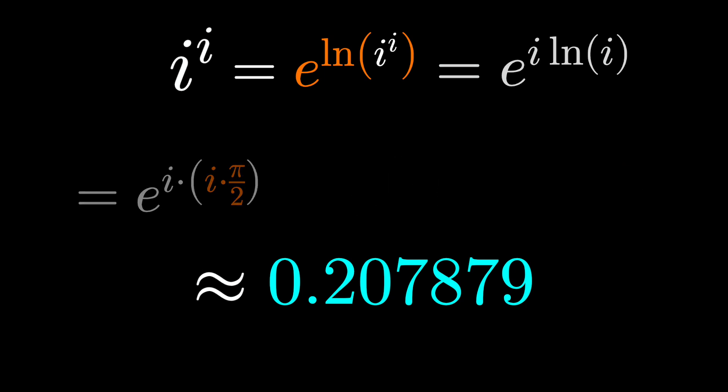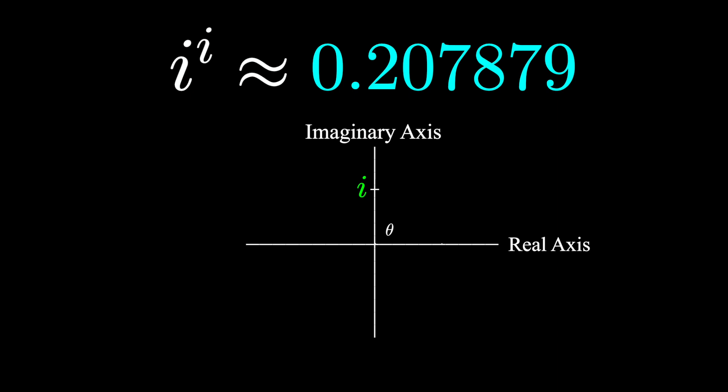There is a caveat if we think about coterminal angles. i does indeed make a 90 degree angle with the positive x axis. Theta is pi over 2. But we could travel around the circle another 2 pi radians and end up in the same place. So theta could be pi over 2 plus 2 pi, and we get a different result. In fact, we could do this infinitely many times, either clockwise or counterclockwise and get an infinite number of solutions.